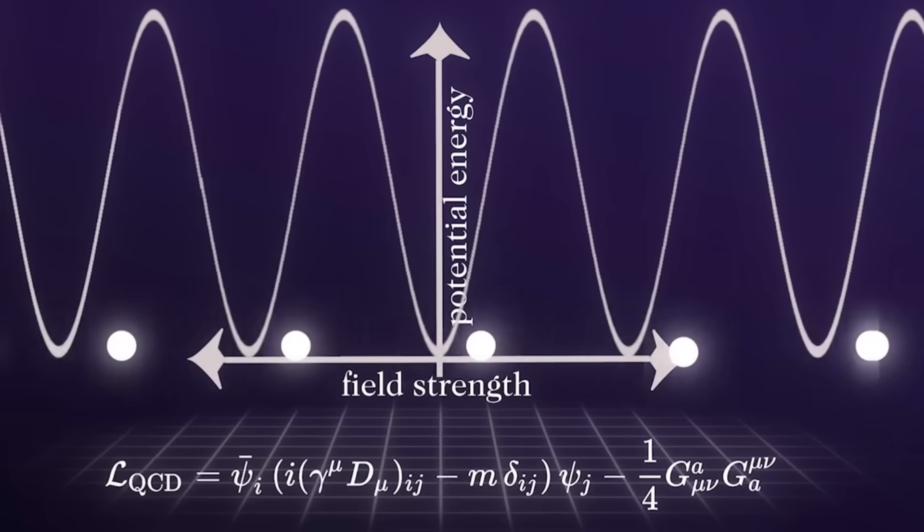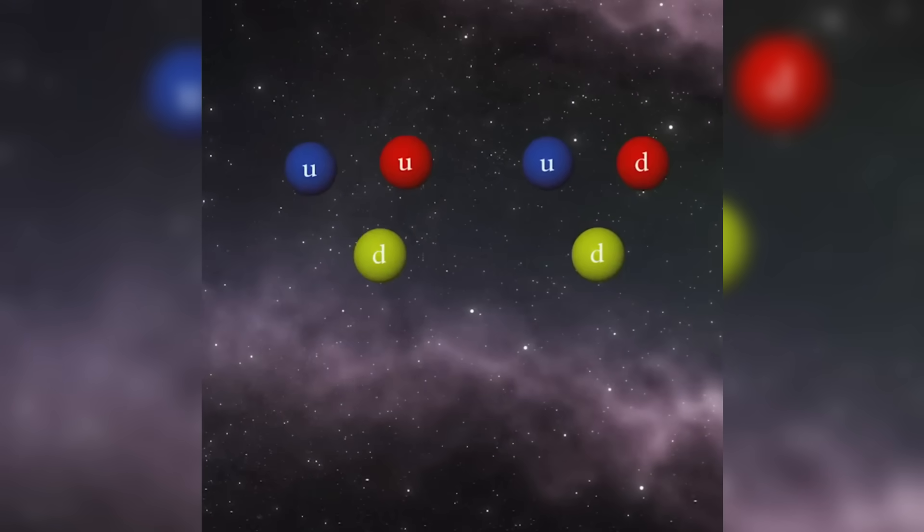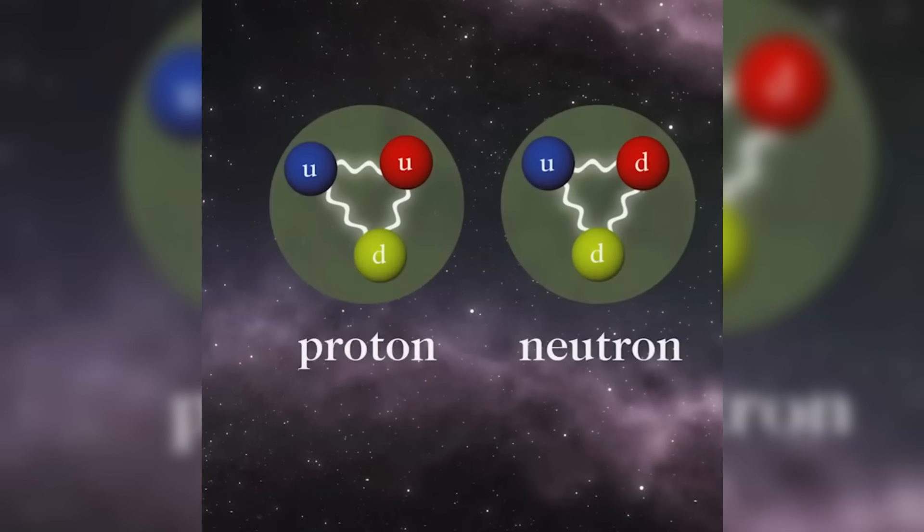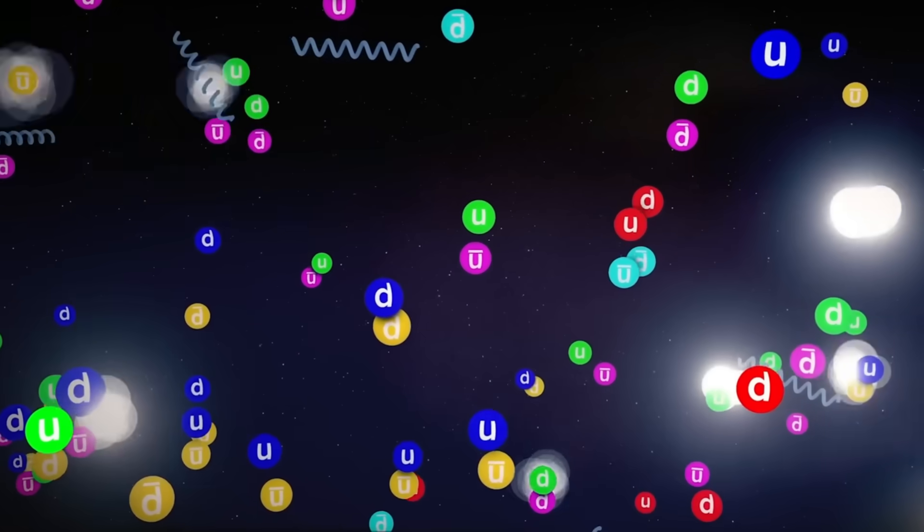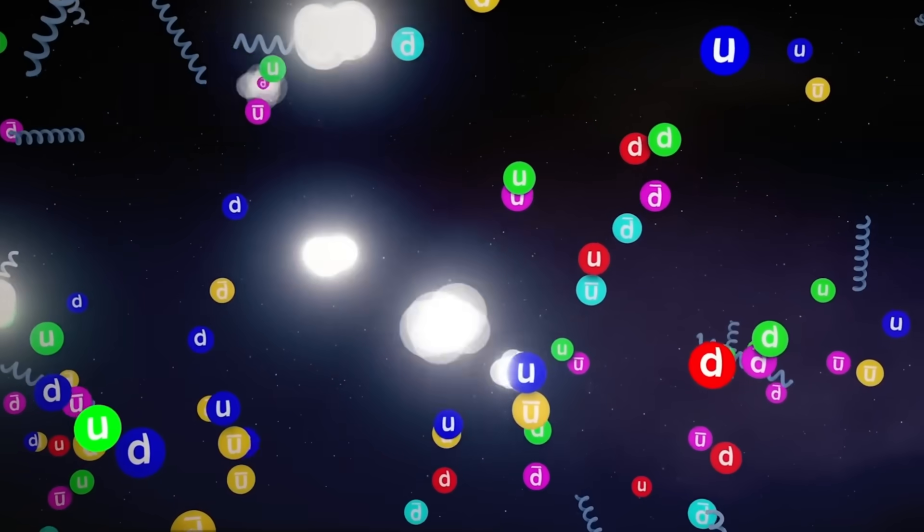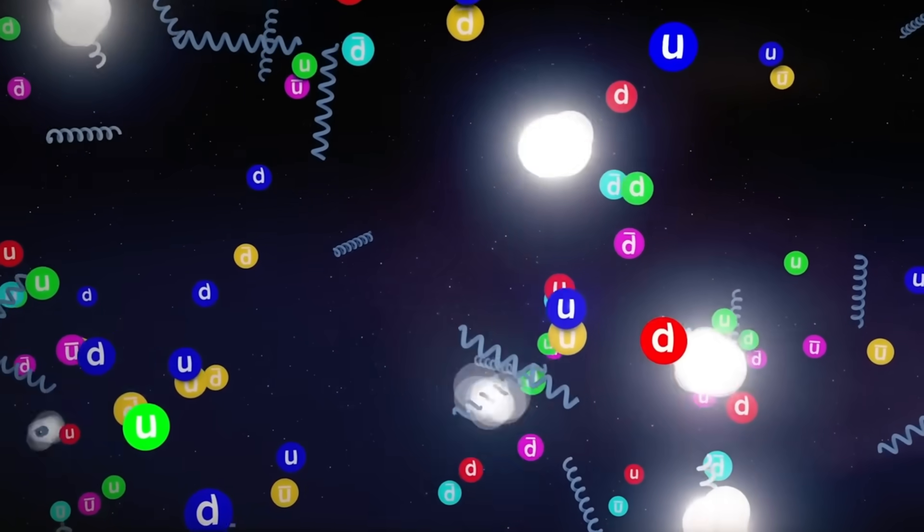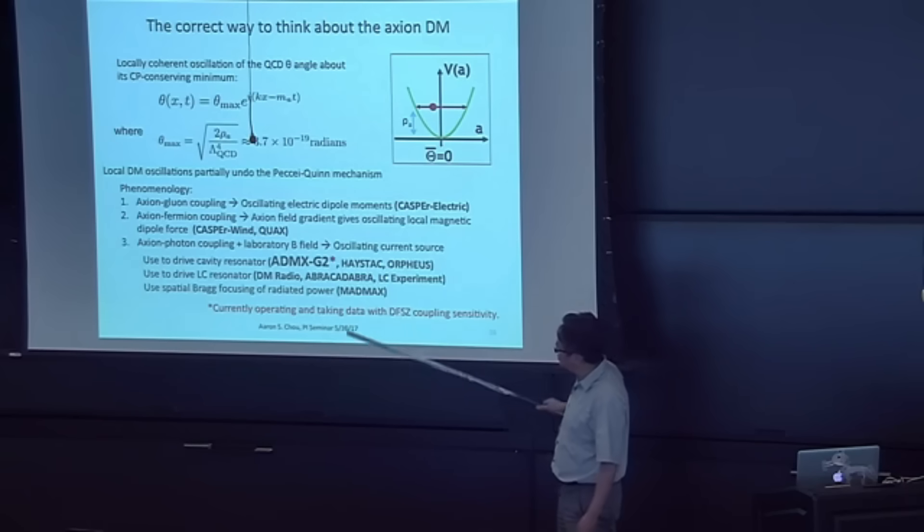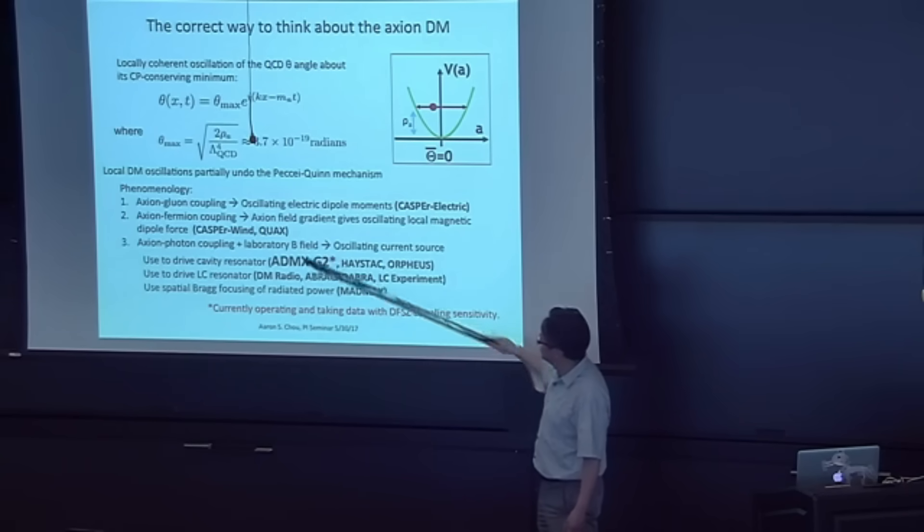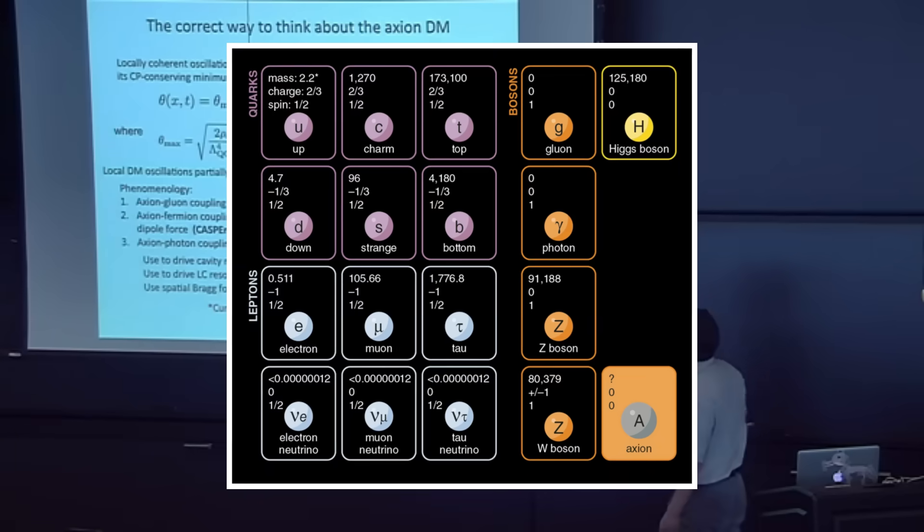Some scientists believe that if Majorana fermions exist, they could be deeply connected to axions. Majorana fermions are unique because they act as their own antiparticles. Unlike regular matter, which has an opposite counterpart, like an electron and a positron, Majorana fermions are neutral and extremely stable.